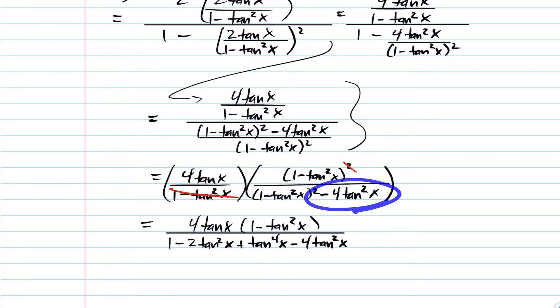Then I just have that minus 4 tan squared x here on the bottom. You'll notice in the bottom I can collect like terms here. We have a minus 2 tan squared x and a minus 4 tan squared x. I can put that together.